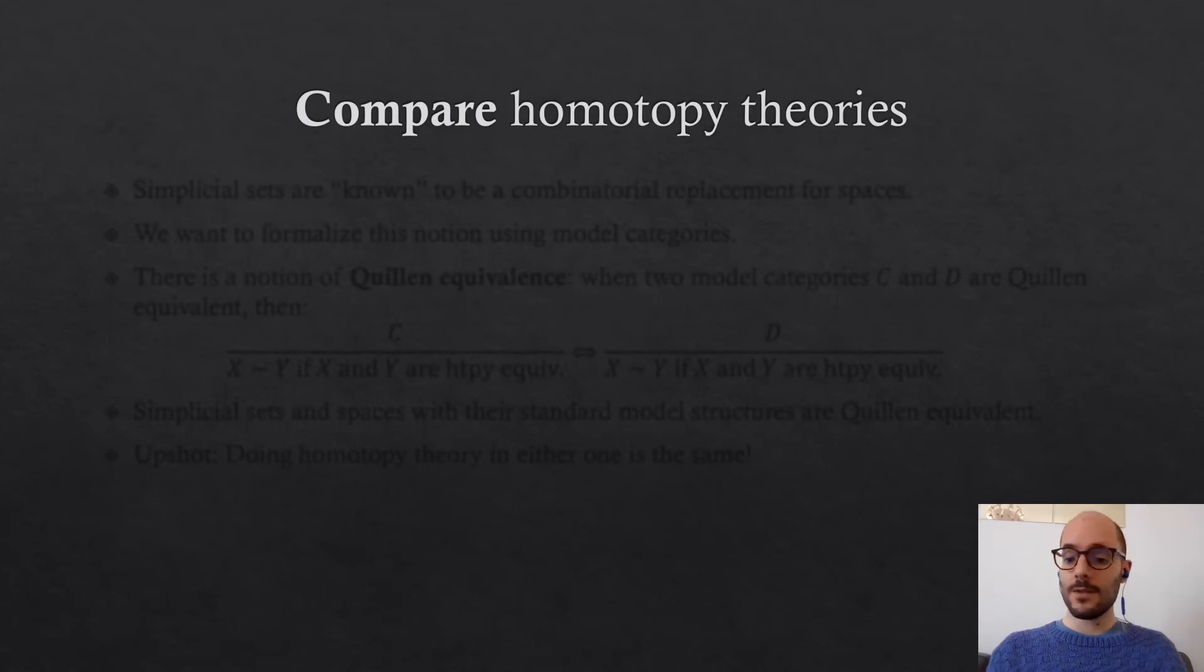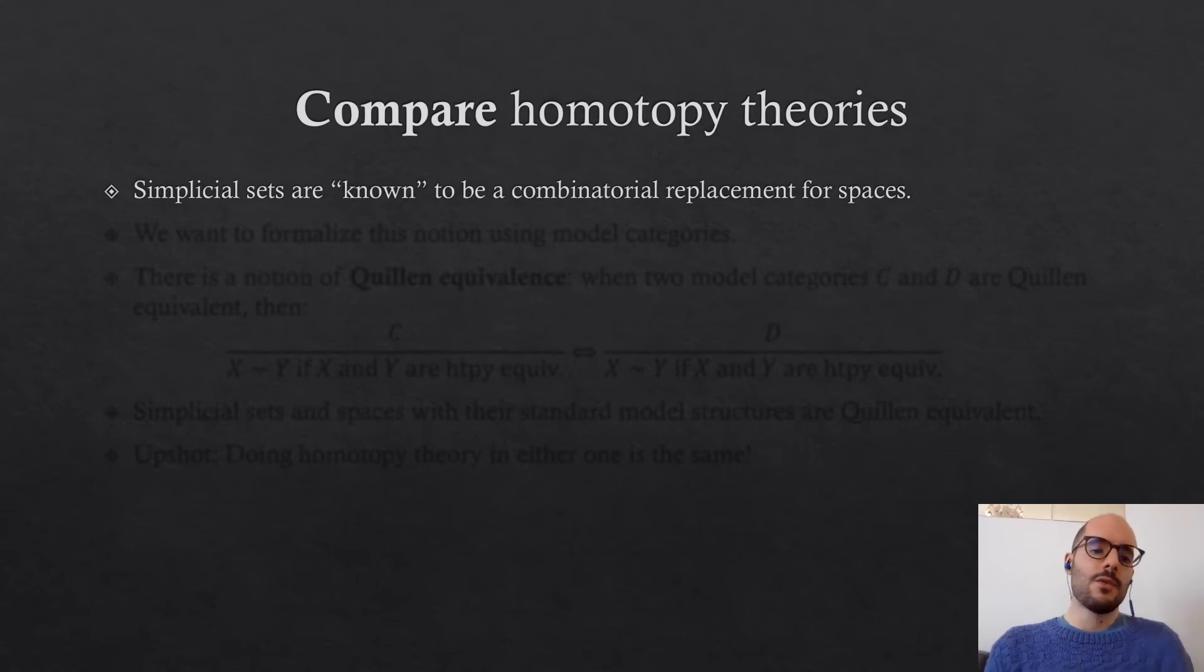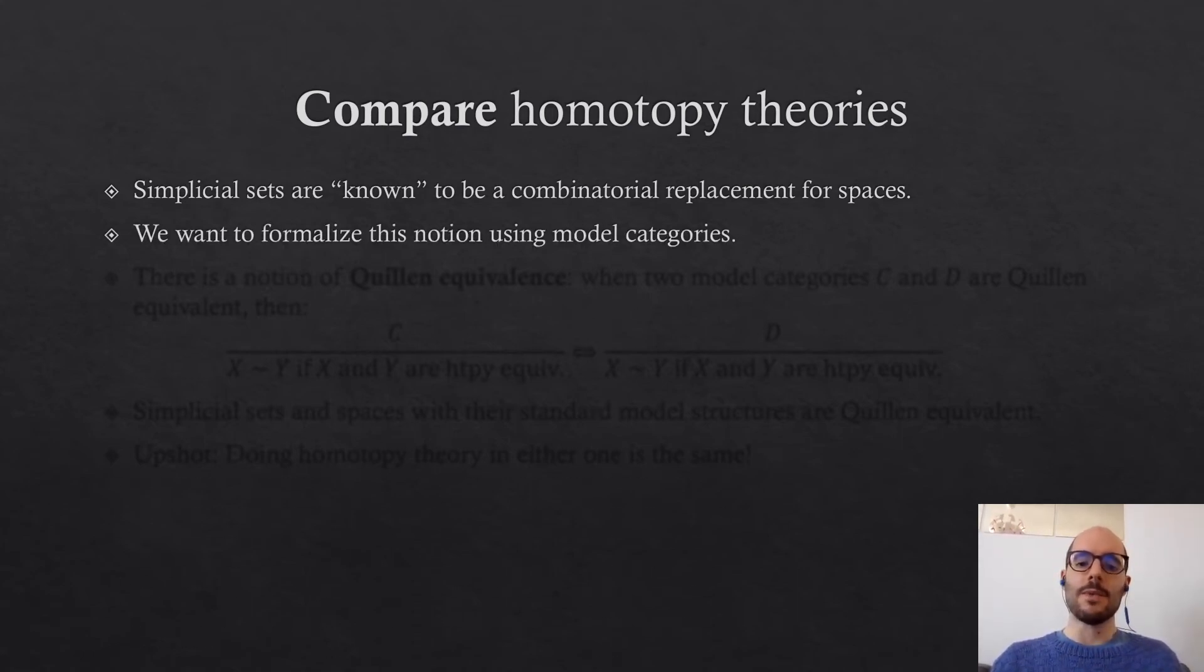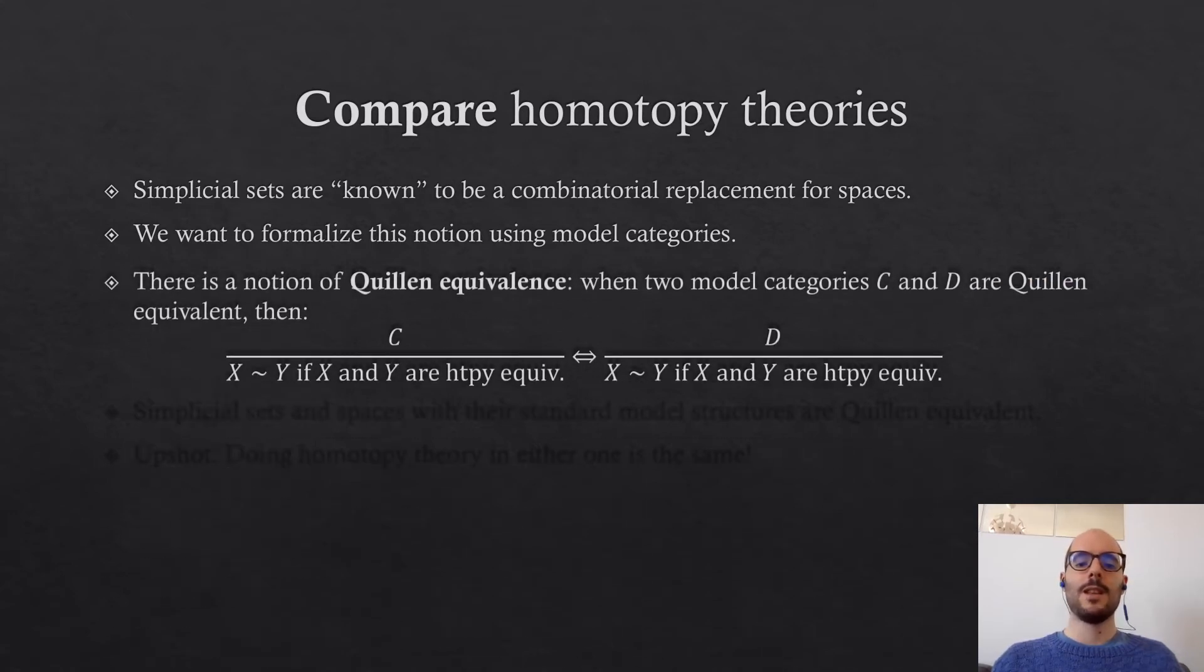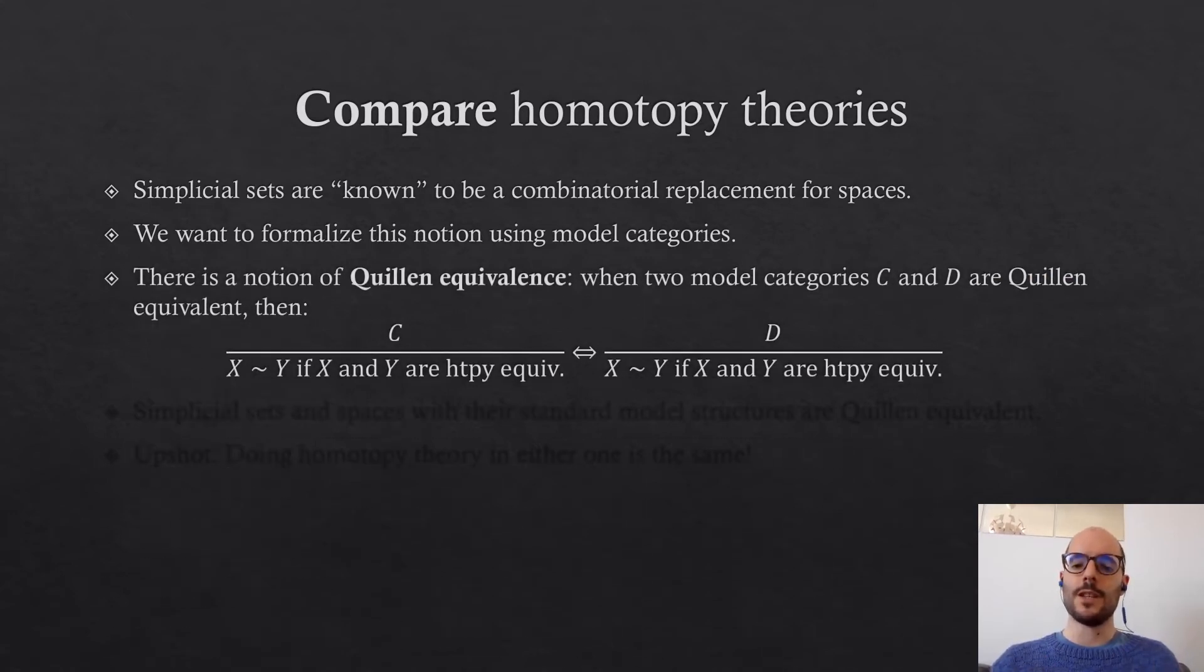Our next goal is to compare homotopy theories. Because, as you know, simplicial sets are somehow a replacement for topological spaces, but what does this actually mean? This notion can be formalized using model categories. There is a notion called Quillen equivalence: two model categories—two categories with this extra structure of fibrations, cofibrations, and weak equivalences—are said to be Quillen equivalent if they satisfy certain properties.